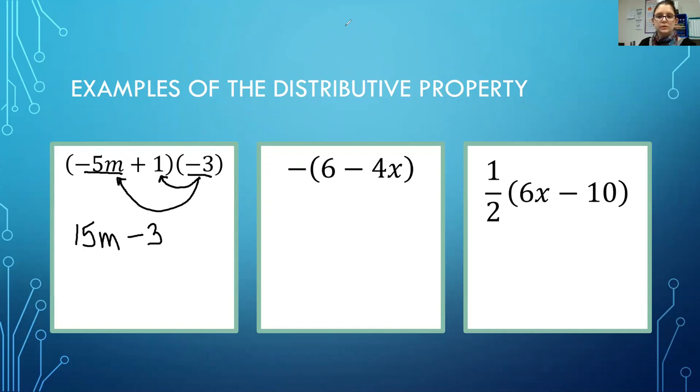So with this one I just have a negative, there's no number with it. Whenever we have a negative alone or a positive alone or a variable alone we can put in a 1. A 1 is understood to be here. So rather than just multiplying by a negative we are going to multiply by negative 1.